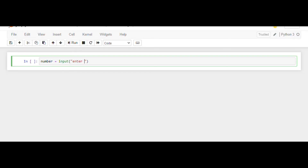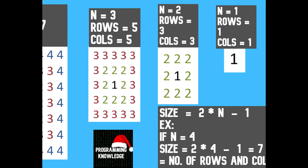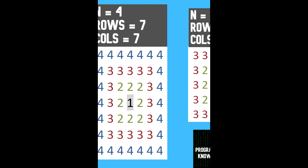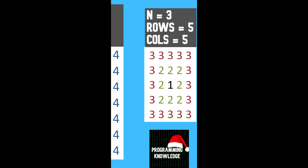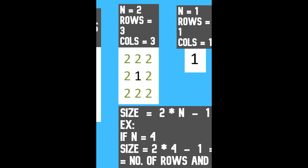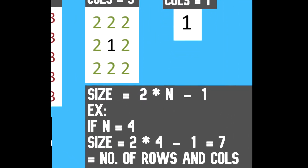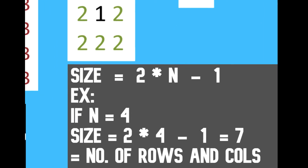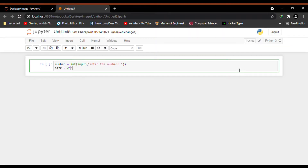First I will take a variable called 'number' — we will take input from the user and convert it into an integer. Before moving further, let's understand the number of rows and columns required to print this pattern. If the number is 4 then it requires 7 rows and columns, if 3 then 5, if 2 then 3, and if 1 then 1. By this we can derive the formula: the number of rows and columns equals two times n minus one. Let's store this in a 'size' variable.